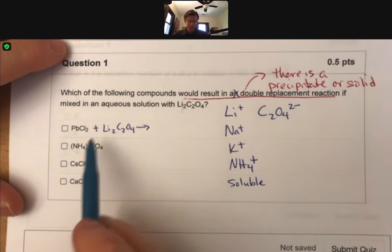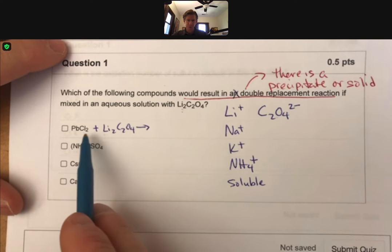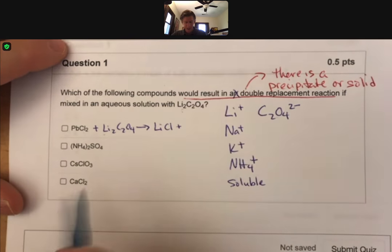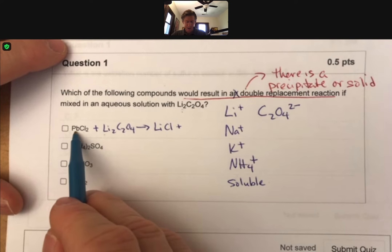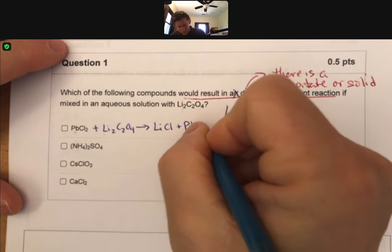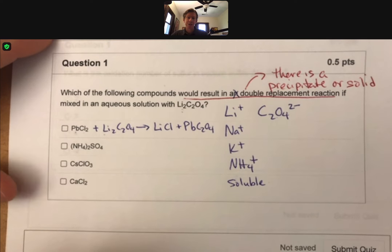Let's do the first one here. This one's going to be lithium oxalate, and you can see that our possible products are going to be lithium chloride, the positive from one with the negative of the other, and lead two oxalate. Bingo, that's going to be insoluble, which means it's going to be solid, which means that there is a double replacement reaction.